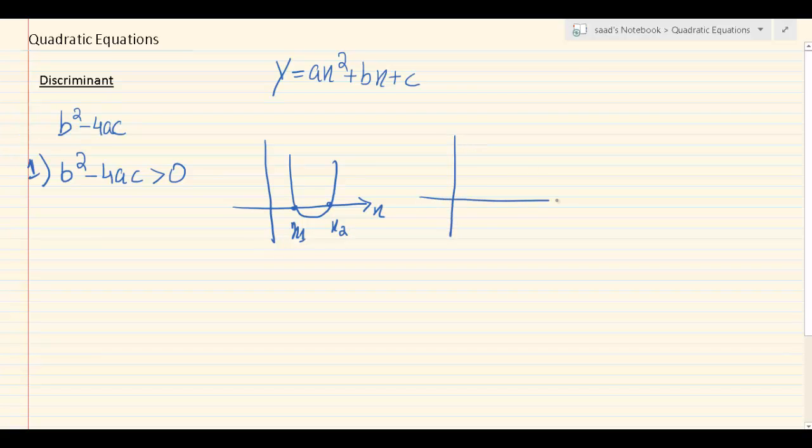Or if it's a maximum curve it will look something like this. Two points at which it's cutting the x-axis: x1, x2. Now you can notice that the common bit here is that they are both cutting the x-axis at two unique points.